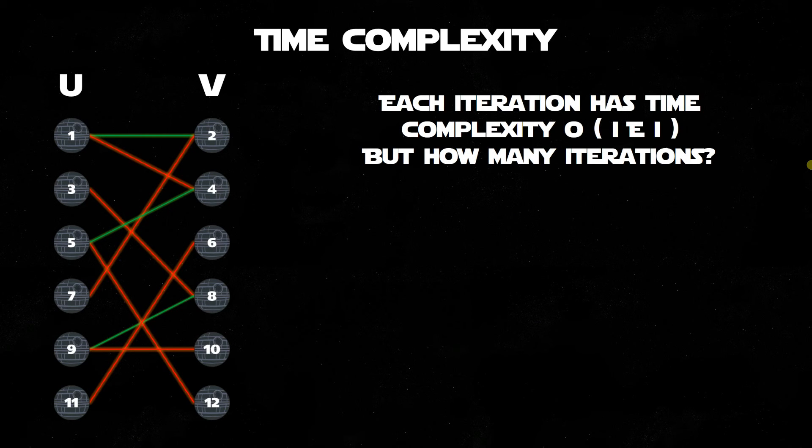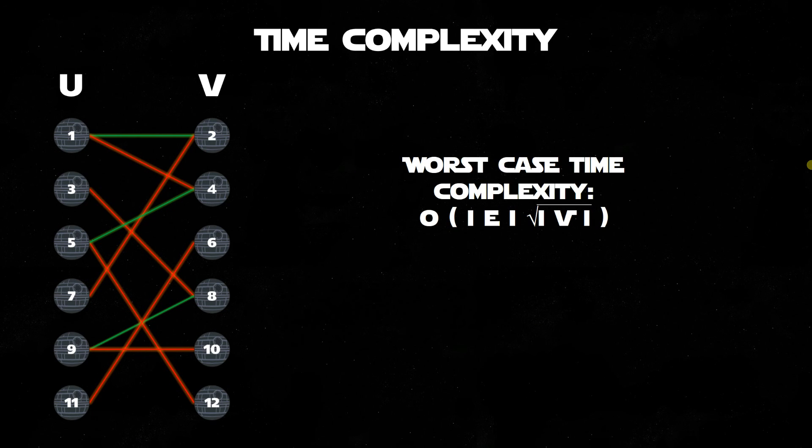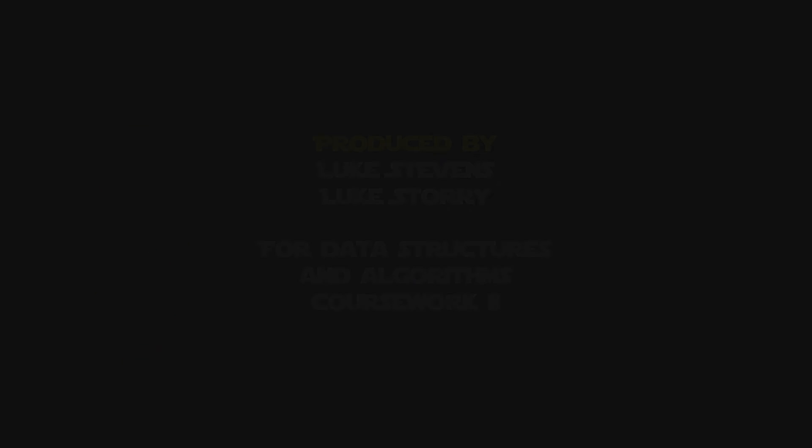So now, how many of these iterations are going to happen? It can be shown that in the worst case scenario, the most number of iterations that will ever happen is two times the square root of the number of vertices in the graph. So we put these two bits of information together, and in the worst case, the time complexity of the Hopcroft algorithm is big O, the number of edges times by the square root of the number of vertices, which is pretty powerful.